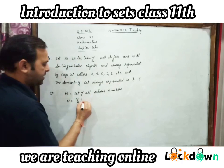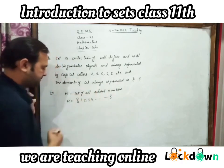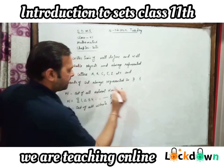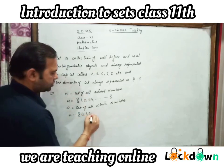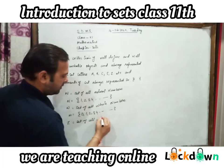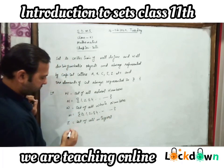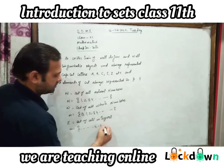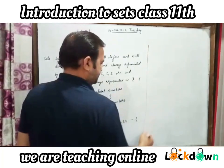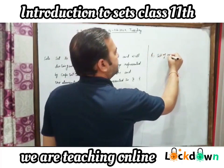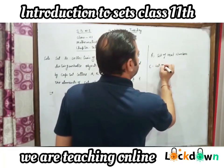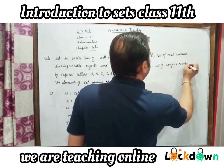For example, N stands for the set of all natural numbers — N = {1, 2, 3, 4, ...}. W is the set of all whole numbers — W = {0, 1, 2, 3, 4, ...}. Z is the set of all integers. R is the set of all real numbers.